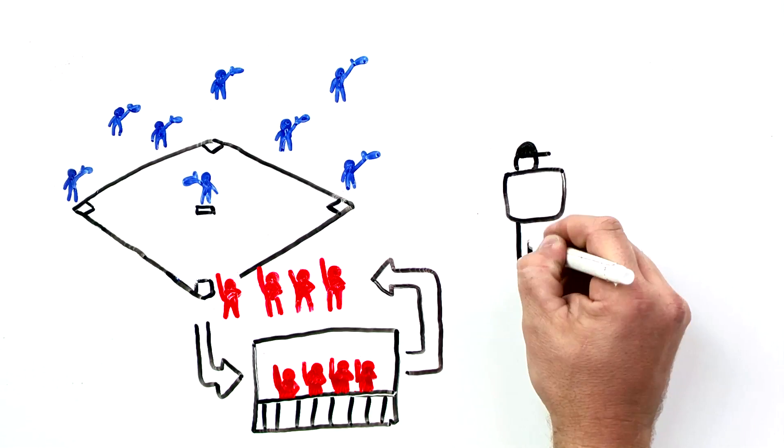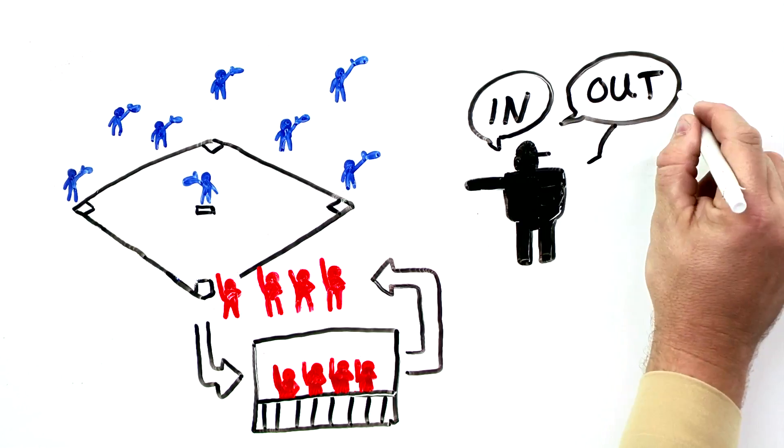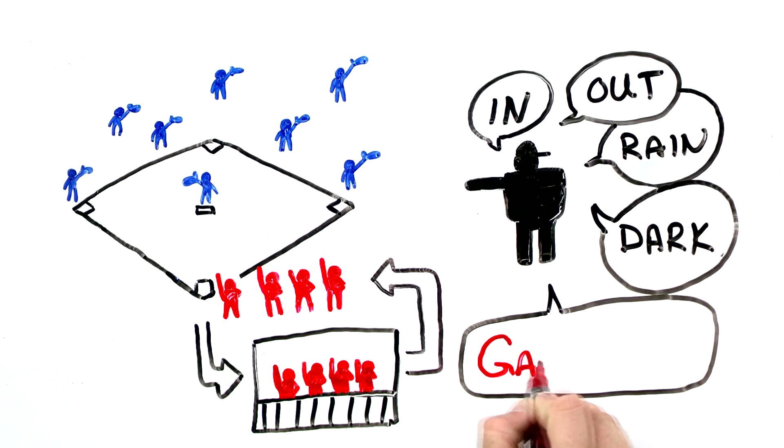There are men called umpires who stay out all the time and they decide when the men who are in are out. Depending on the weather and the light, the umpires can also send everybody in no matter whether they're in or out.